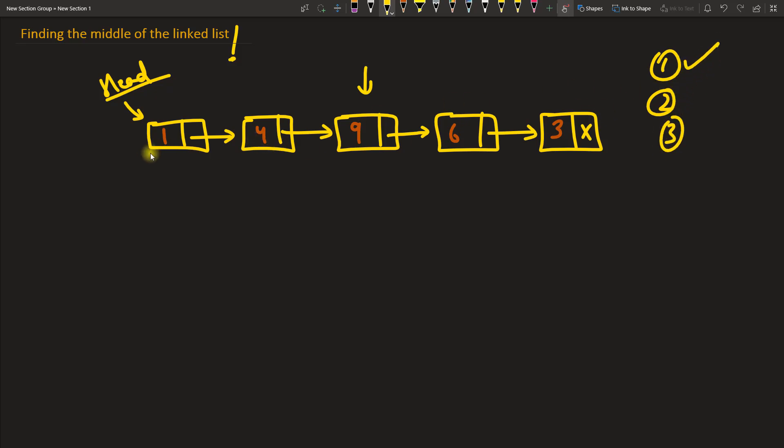So the first one is very simple. You might have already guessed it. In one loop you iterate over till you reach the end, and once you reach the end you already know how many nodes are there. Then you just divide by two and you know what that number is.